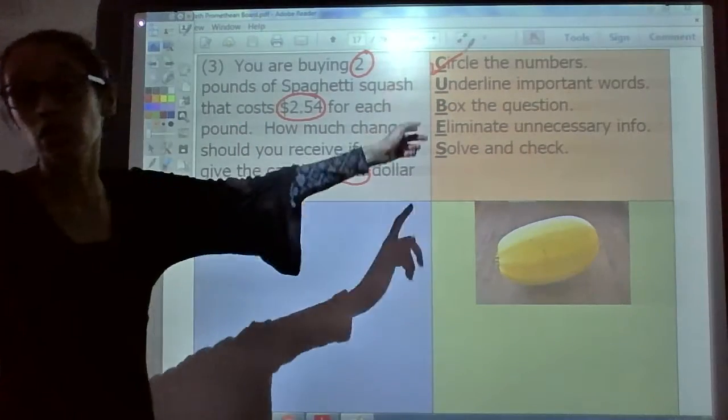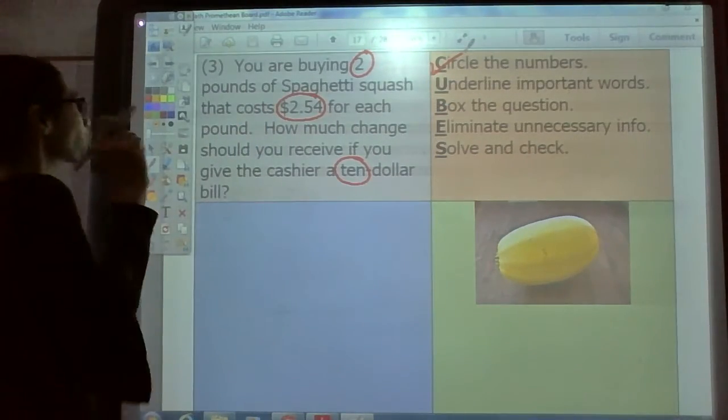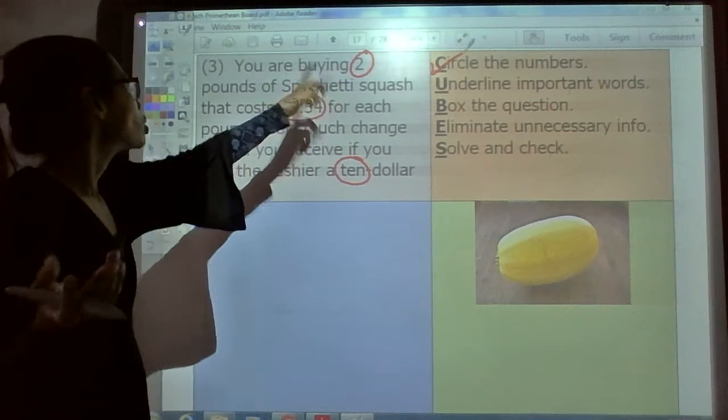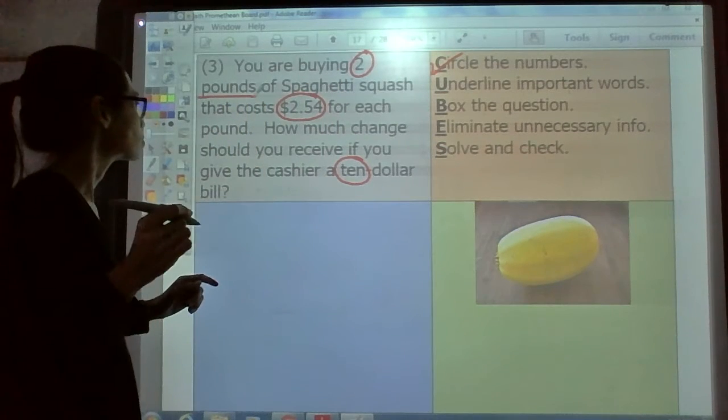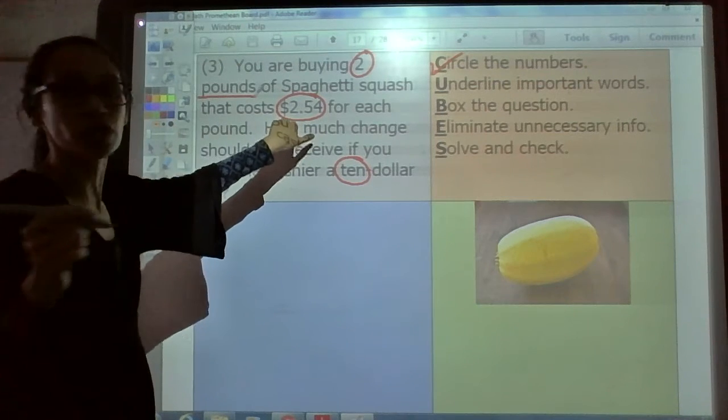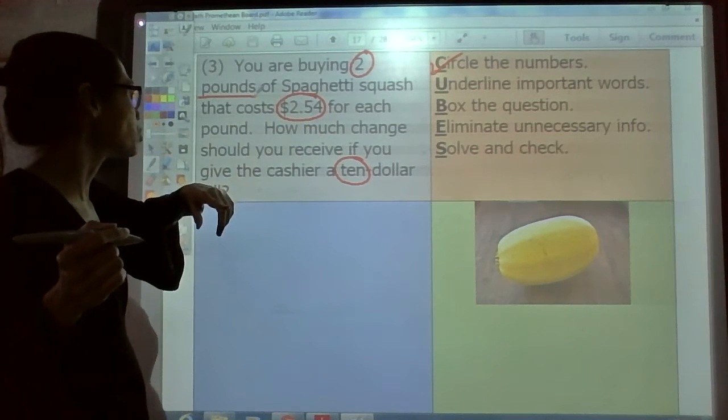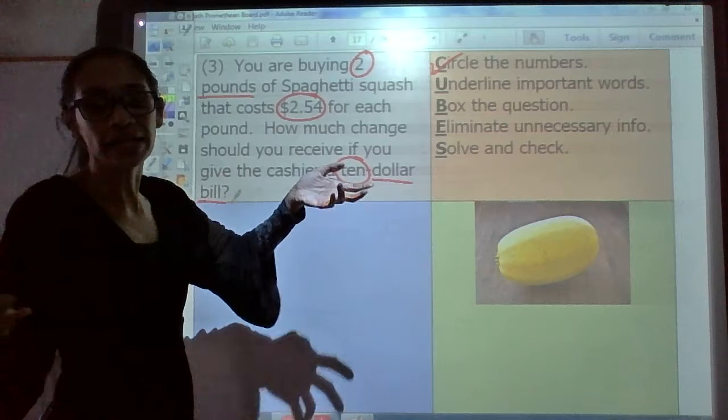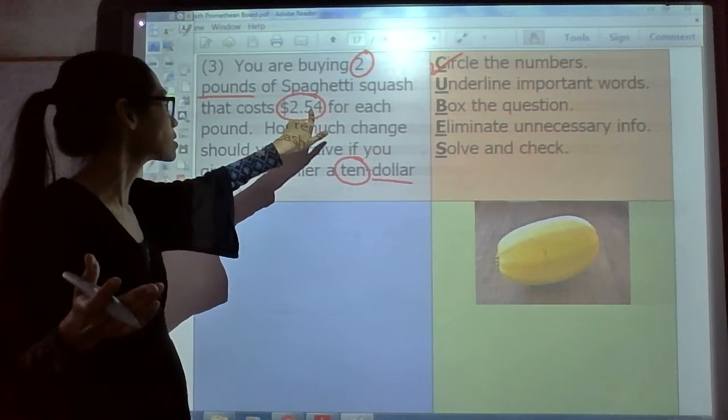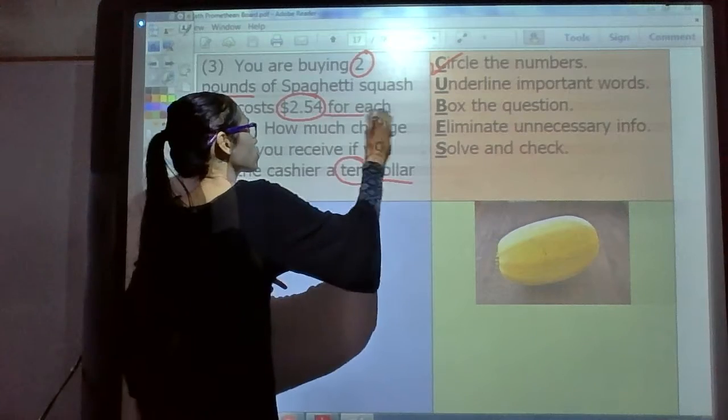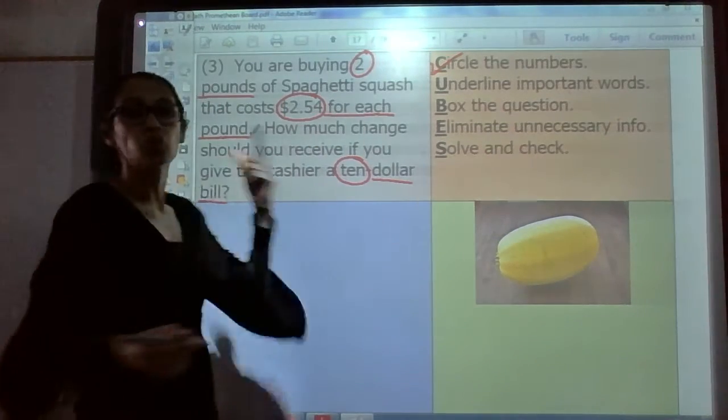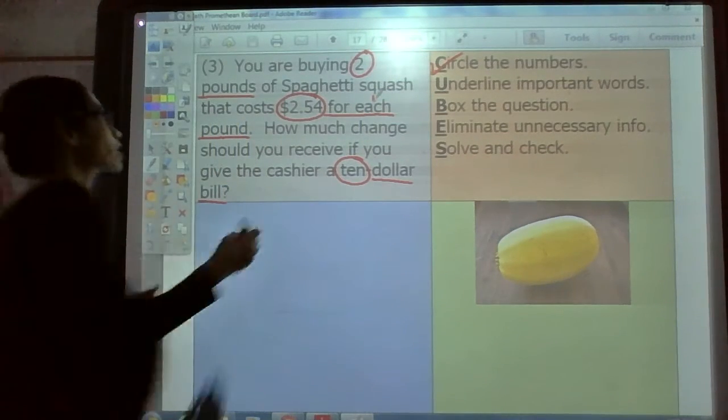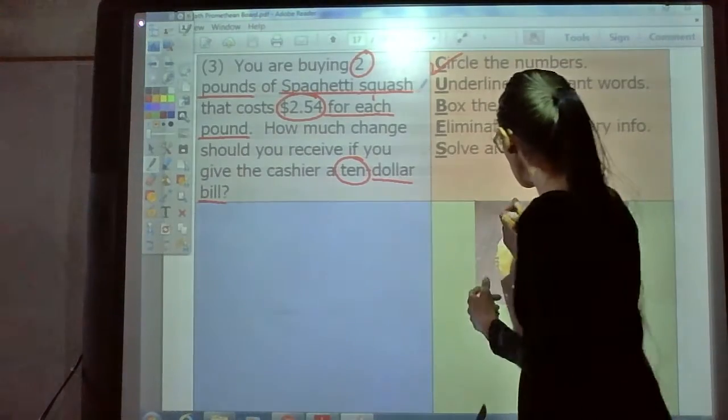The next step in our CUBES clues is the U step to underline important words. Find some important words for me. We can start with the unit. Let's start with that unit. Two what? Two pounds. What else do you see? Well, that one has the unit already right there, dollars. And what else do you see? Right here, $10 bill. Now, there's an important phrase that goes with this $2.54. It's what? For each pound. So, each means what? That means for every one pound. So, I'm going to put a one right there for every one pound. What else do you see? Spaghetti squash. That is a spaghetti squash. Have you seen that before?